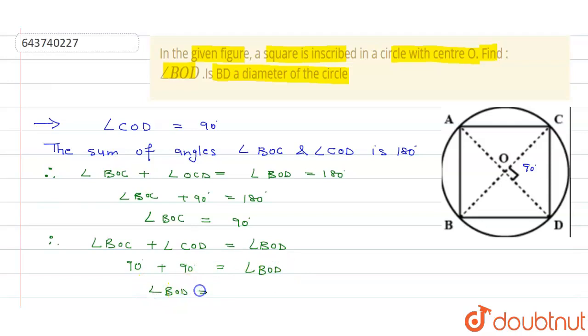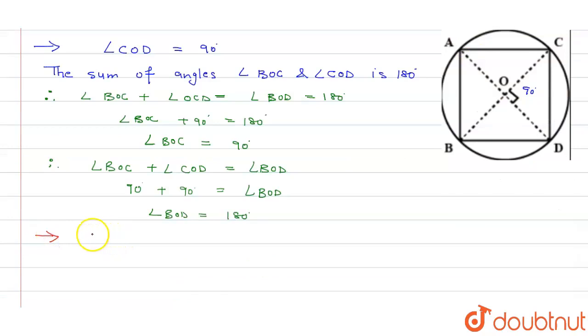Angle BOC plus angle COD is equal to 180 degrees, and we can say that yes, BD is the diameter of the circle and that is our answer.